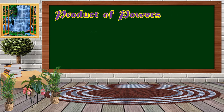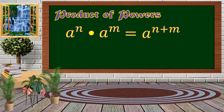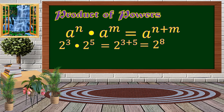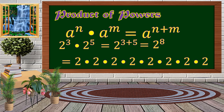The first law is the Product of Powers. When we multiply polynomials with the same base, we just copy the base and add the exponents. For example, 2 raised to 3 times 2 raised to 5 gives us 2 raised to 3 plus 5, which is 2 raised to 8, and the product is 256.